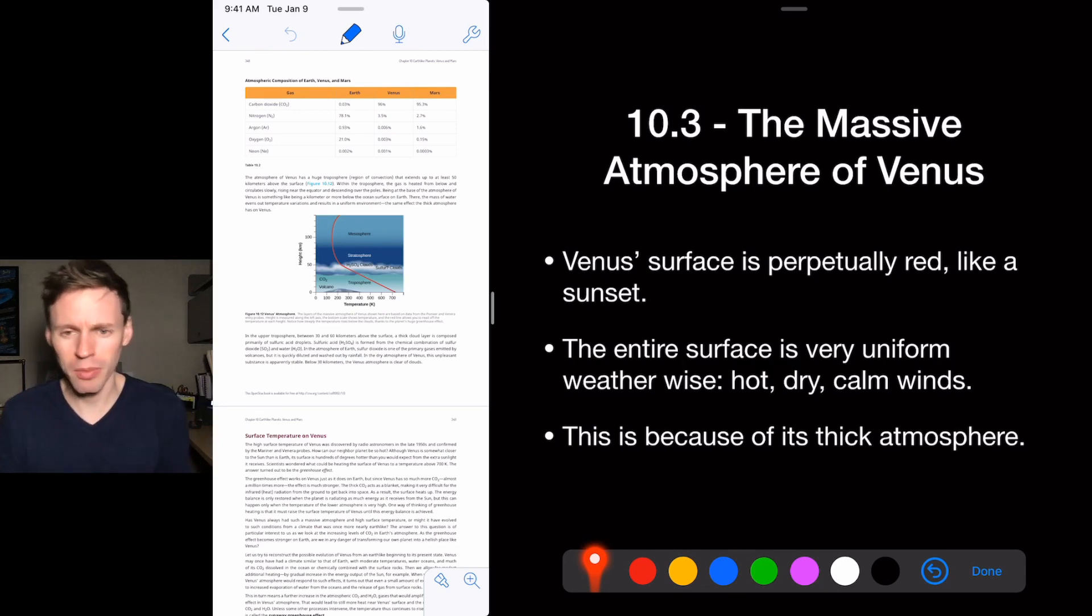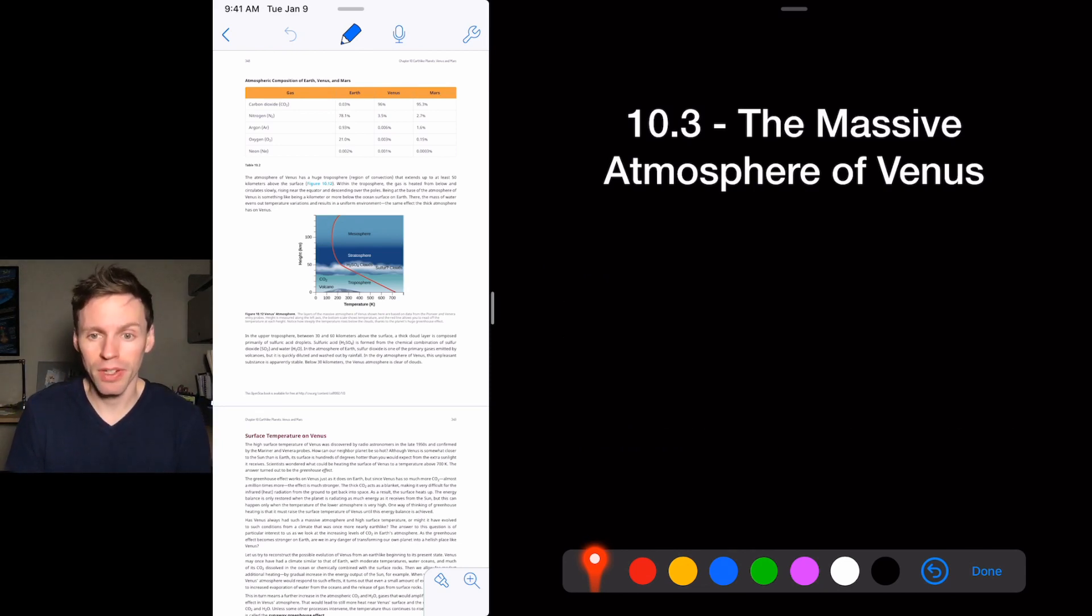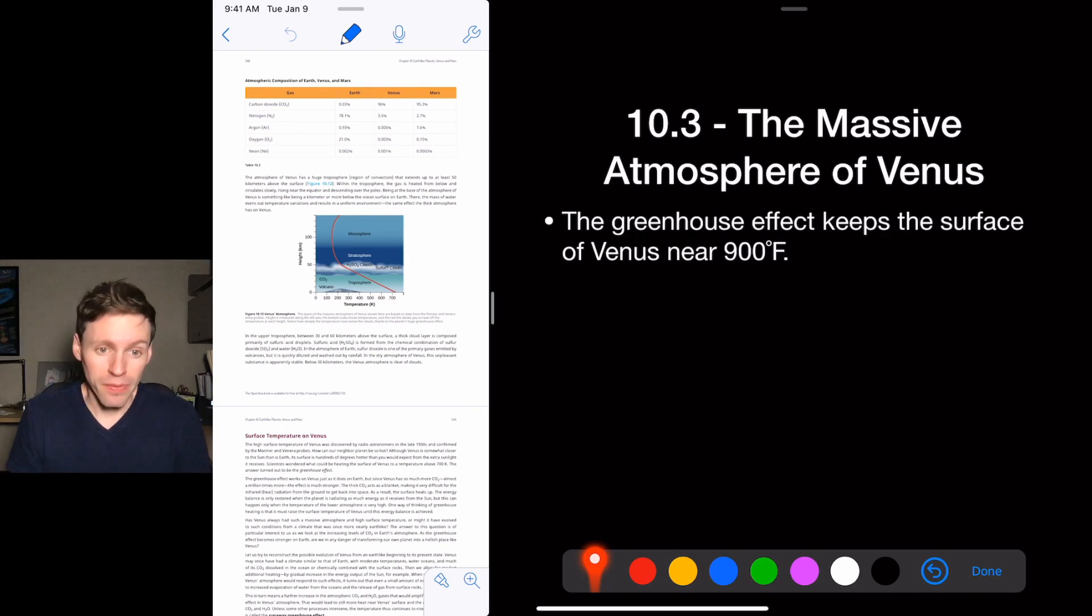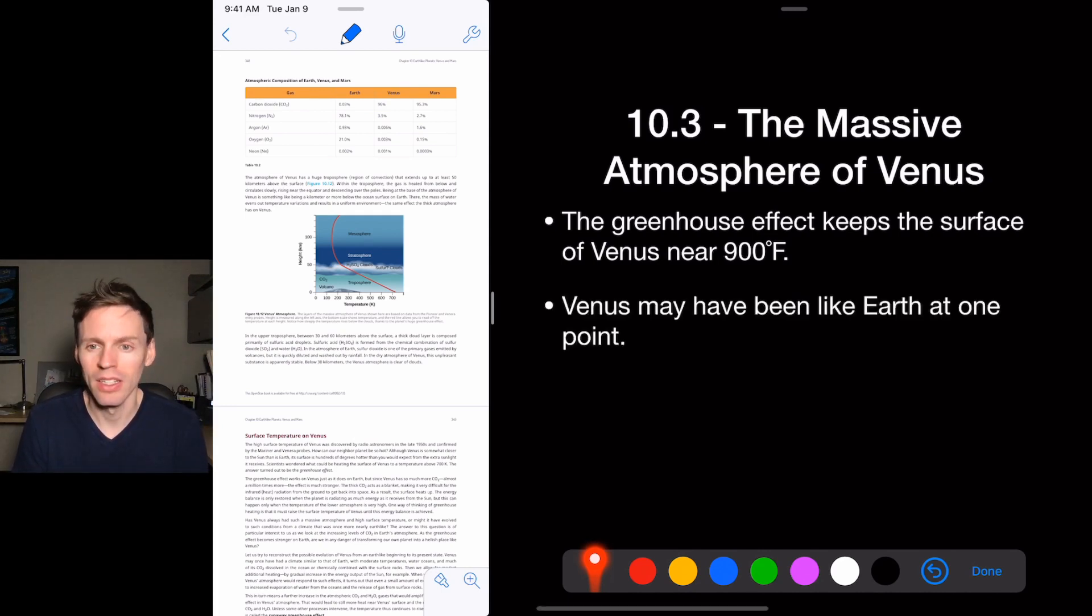This is because it has a very thick atmosphere. The greenhouse effect, the ability of the atmosphere to hold on to heat, it keeps Venus's surface at 900 degrees Fahrenheit. That's insanely hot, 850 degrees. It may have been like earth at one point, but slowly over time, the atmosphere got out of balance and built up.